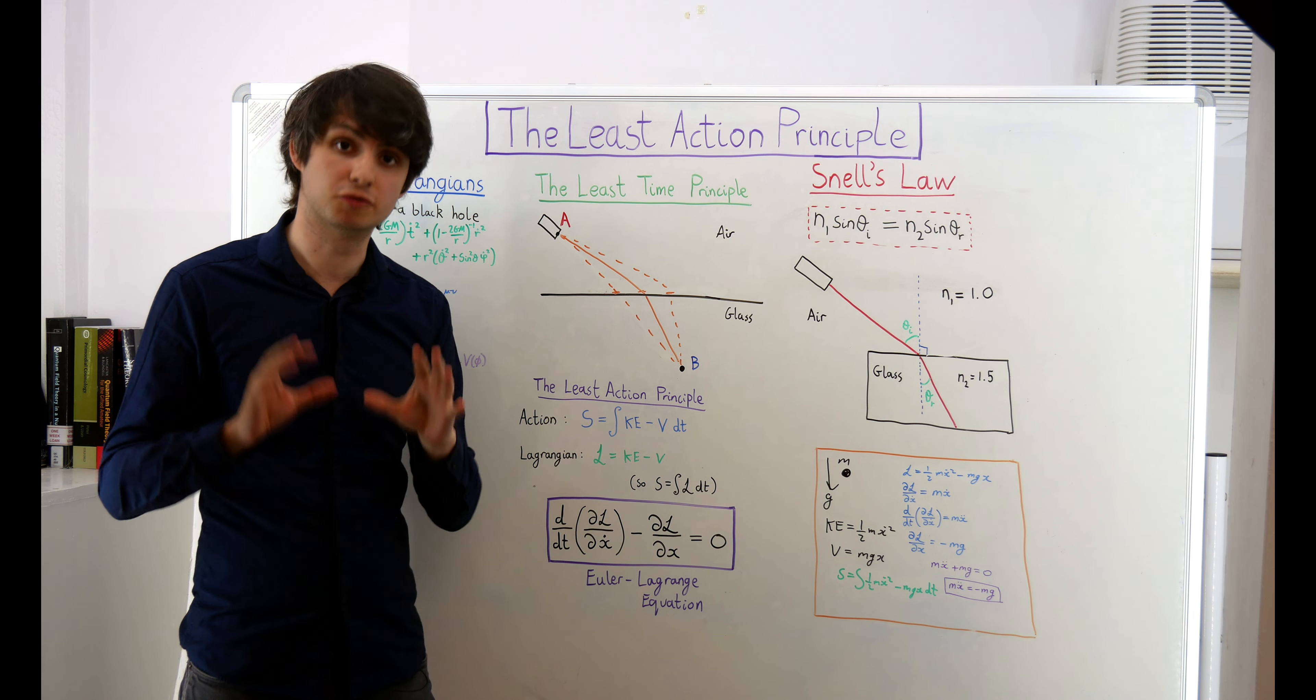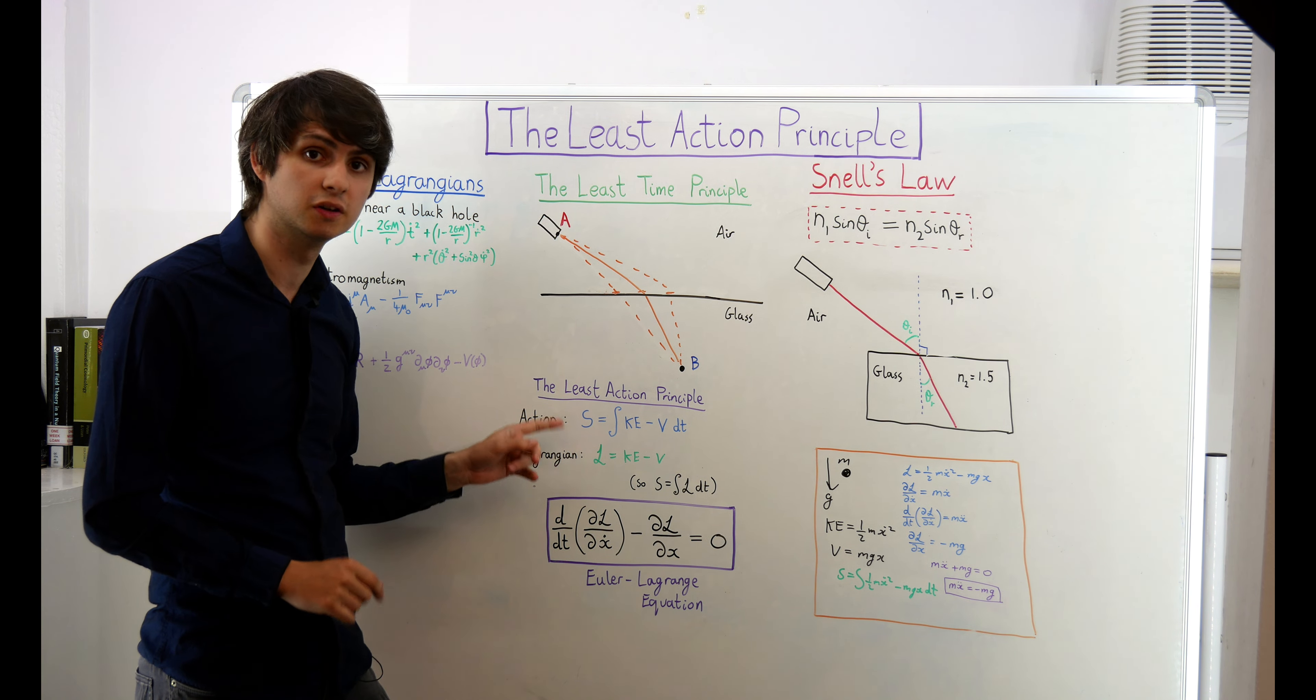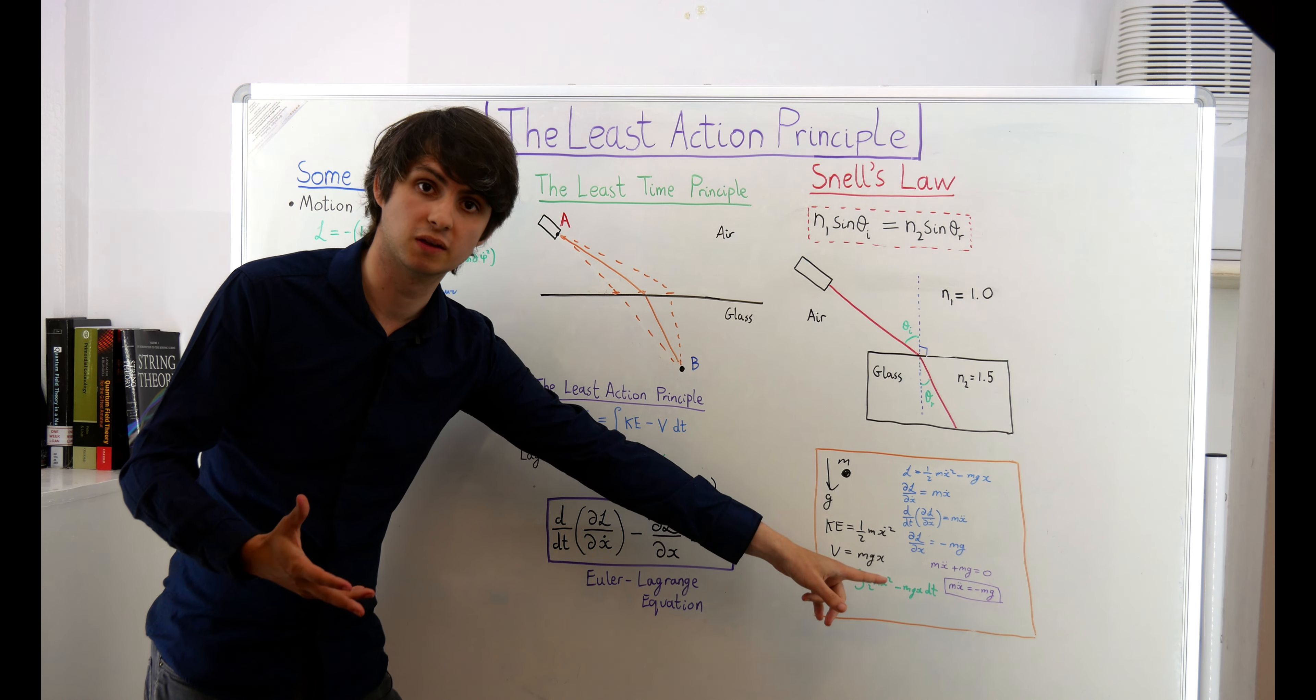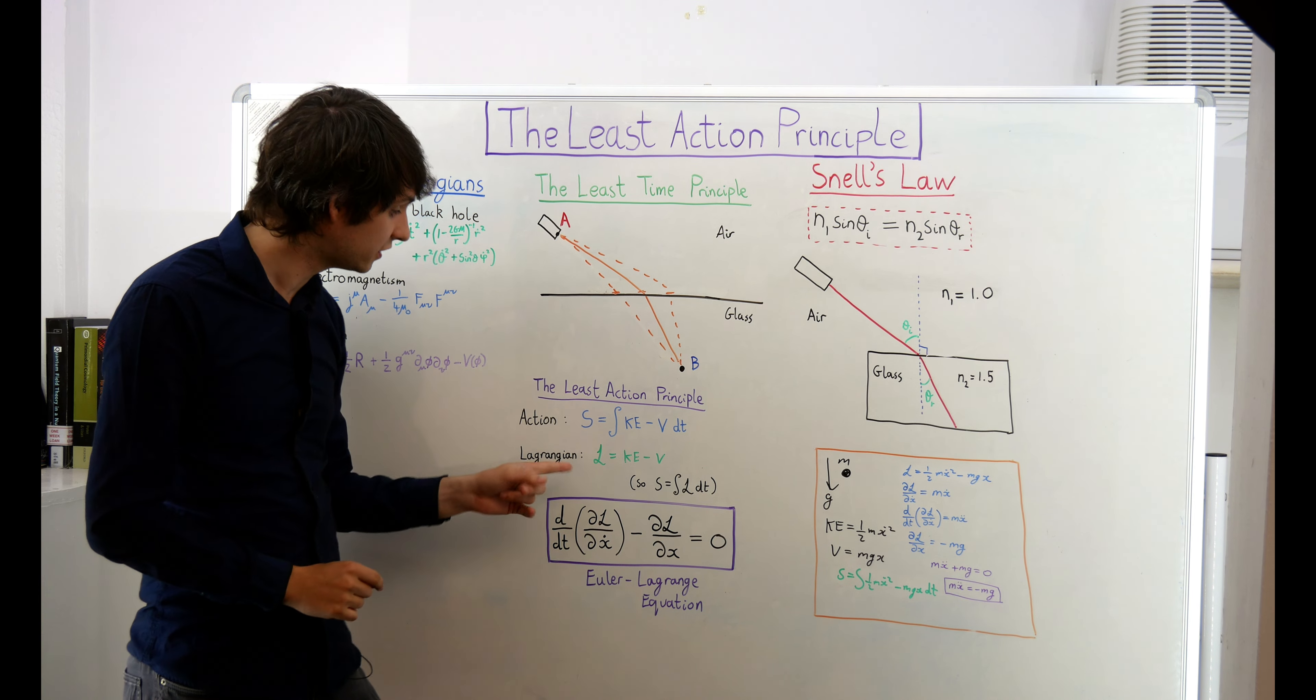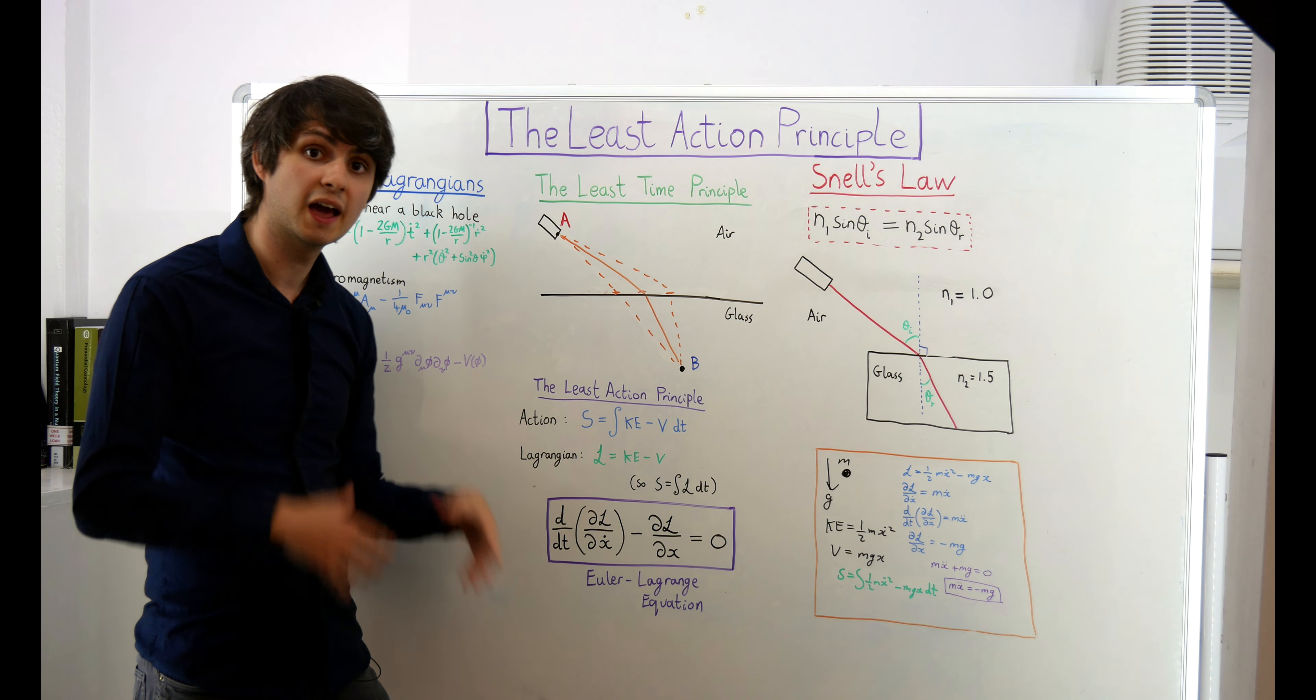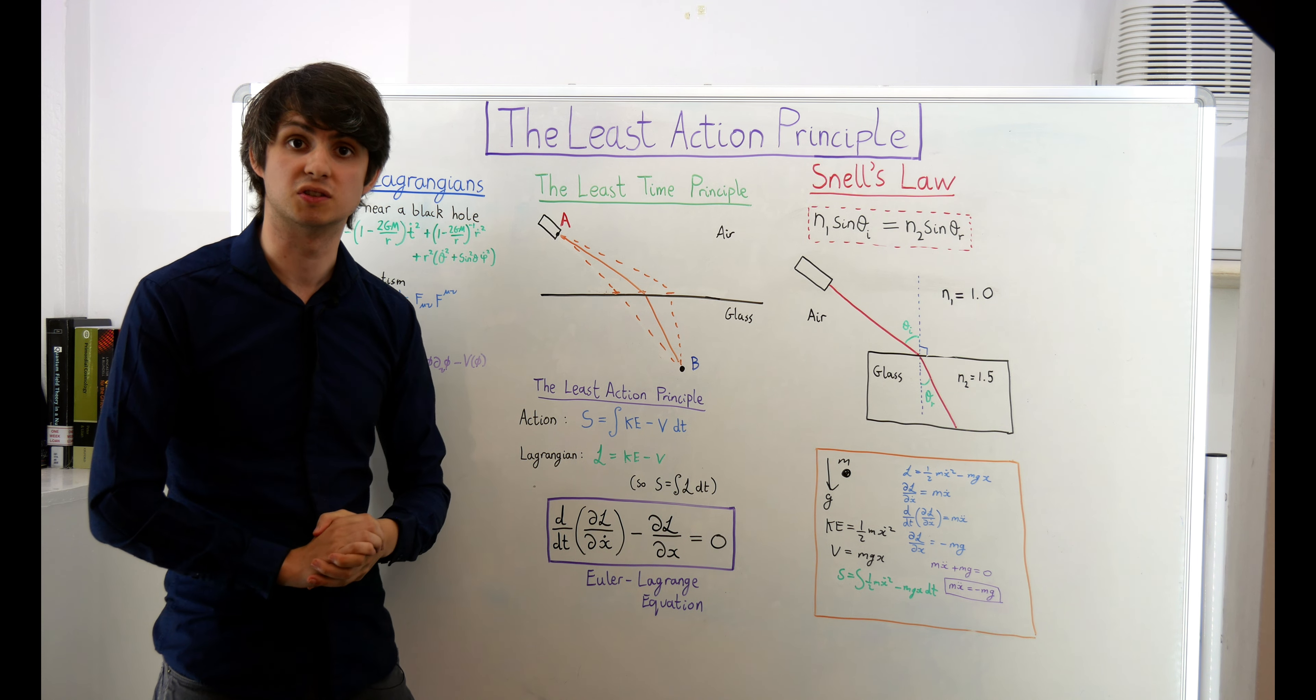but what we've just seen is that Newton's laws of motion can be derived from a single, more fundamental principle. If we merely assume that physical systems are lazy and minimize their total action, then we get the equations of motion for that system for free. This way of doing mechanics is called Lagrangian mechanics. Take any system, write down its Lagrangian, work out the Euler-Lagrange equation, and you get the equations of motion, the laws that that system will obey.